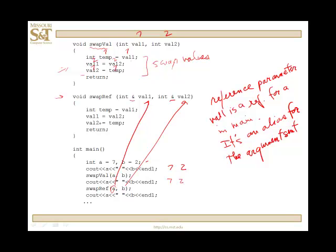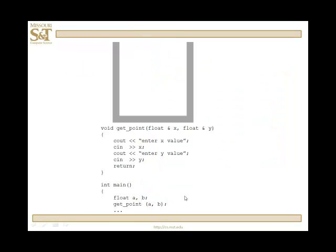And they get swapped in the function, and that means they're going to get swapped down here, and the values are 2 and 7 when we output them at the end. So let's take a look at the runtime stack with another function here.